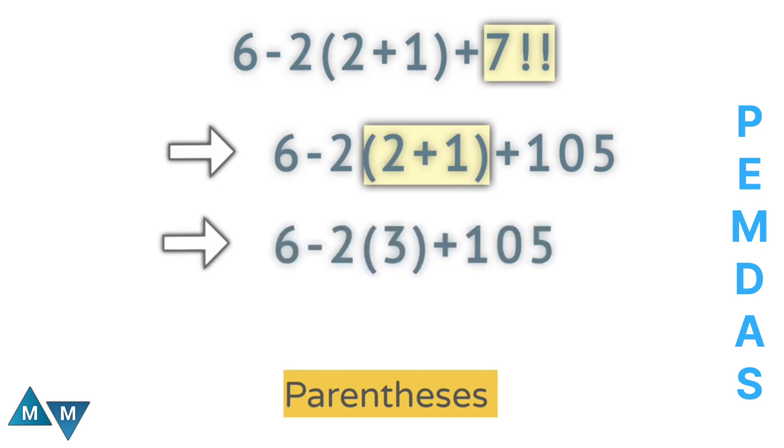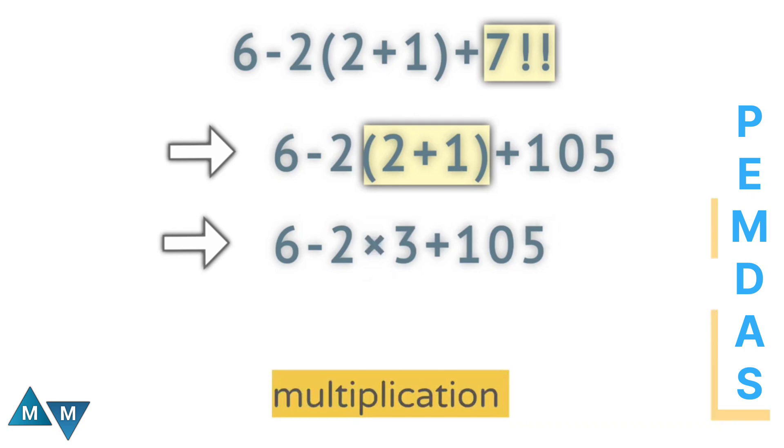Now 2 next to this parentheses - this is actually multiplication. Since according to PEMDAS rule, multiplication has a higher priority. So 2 times 3 will be our first move, which equals 6.